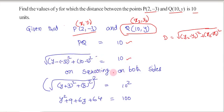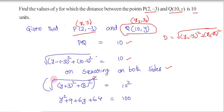On squaring both sides, we get (y - (-3))², which becomes (y + 3)² — because minus of minus gives plus — plus (10 - 2)², which is 8², equal to 10². The square and square root cancel.